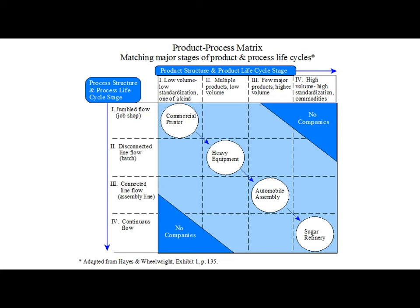The second example is heavy equipment, where the product structure is multiple products at low volume. The operation process here is a batch process with disconnected line flows. The next example is automobile assembly, where the product structure is few major products at higher volume, and the operation process is a connected line flow, that is, an assembly line. The last example is a sugar refinery, where the product structure is high volume and high standardization commodities, and the operation process is continuous flow.